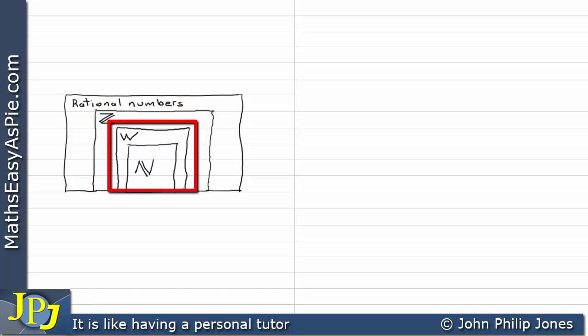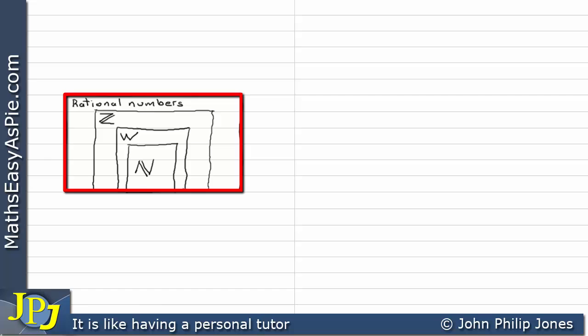We could do something similar for whole numbers and natural numbers. But rational numbers also include values that are not integers, such as 0.5 and 3.75. We've seen examples of rational numbers like 0.5, which can be expressed as 1 divided by 2, and also recurring fractions such as 0.3333, which can be represented by 1 over 3 — a ratio of integers.